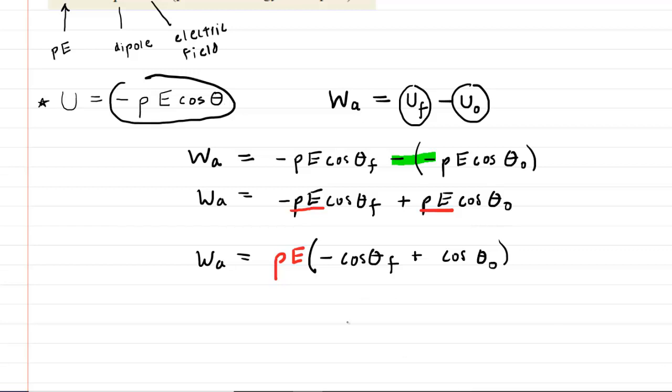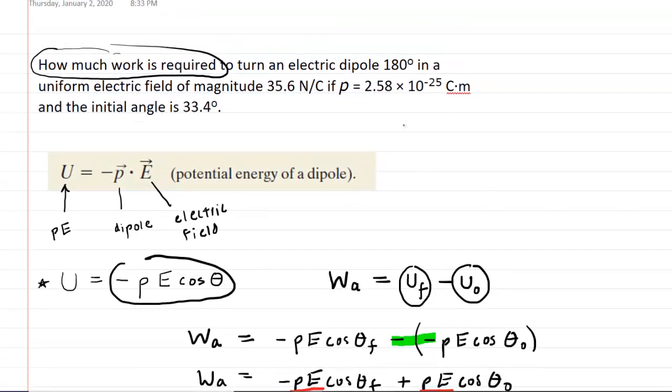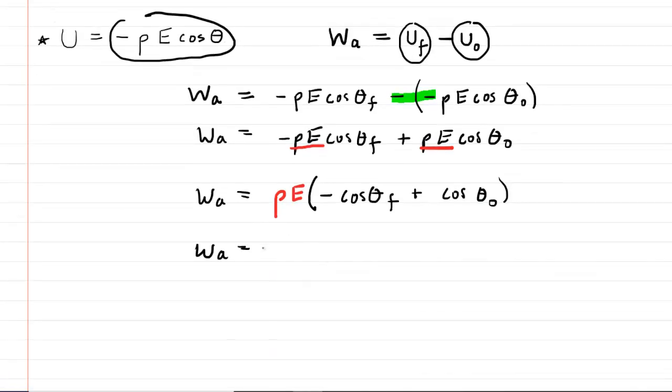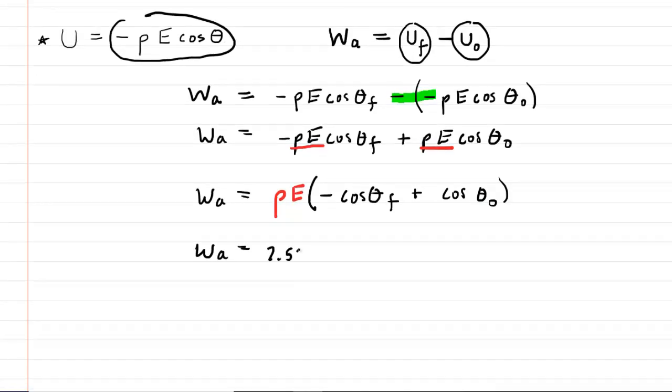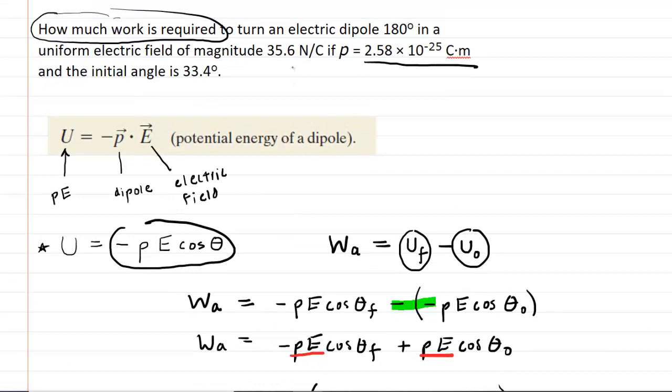We can now begin to plug in some known values here. The question gave us the magnitude of P, the electric dipole. That was 2.58 times 10 to the negative 25 coulomb meters. Multiplied by the magnitude of the electric field, which was given as 35.6 newtons per coulomb.